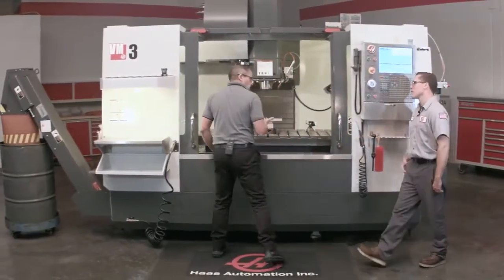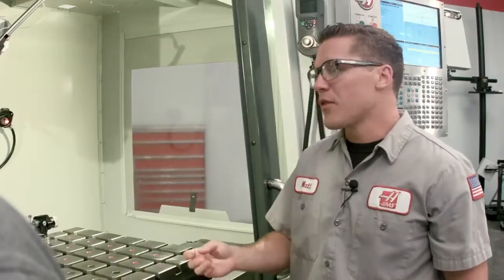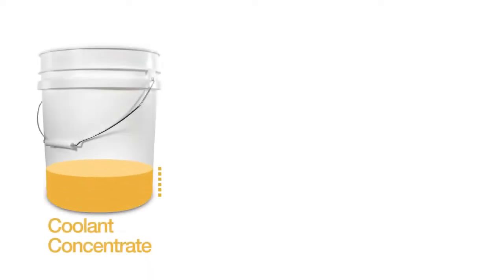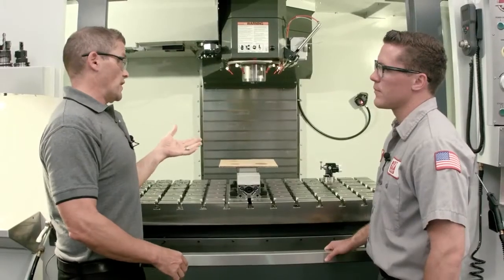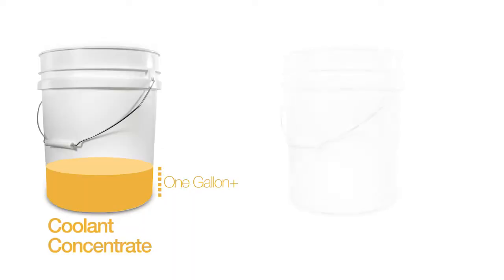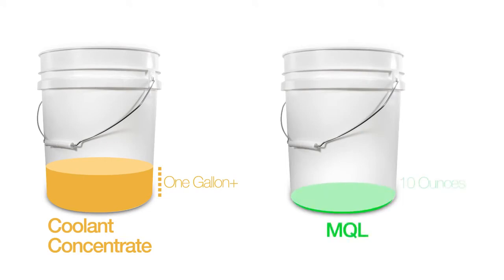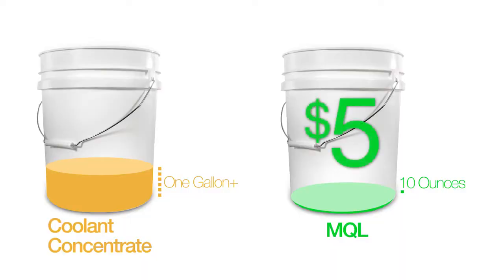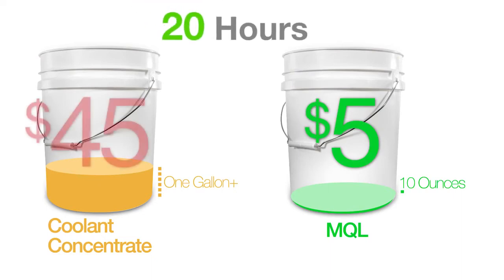So how much oil are we actually using? We're using about half an ounce of oil per hour of cutting — pretty typical of an MQL application, and some run even leaner than this. For comparison, on this machine we're using about 20 gallons of coolant per week mixed at a 6% concentration over about 20 hours of cutting — that's over a gallon of concentrate. With MQL, those same 20 hours of cutting costs only about 10 ounces of oil. So we're using at least 10 times less MQL oil than coolant concentrate. Putting dollars to it: it costs about $5 to cut for 20 hours with MQL versus $45 with flood coolant. MQL can definitely save you a lot of money.